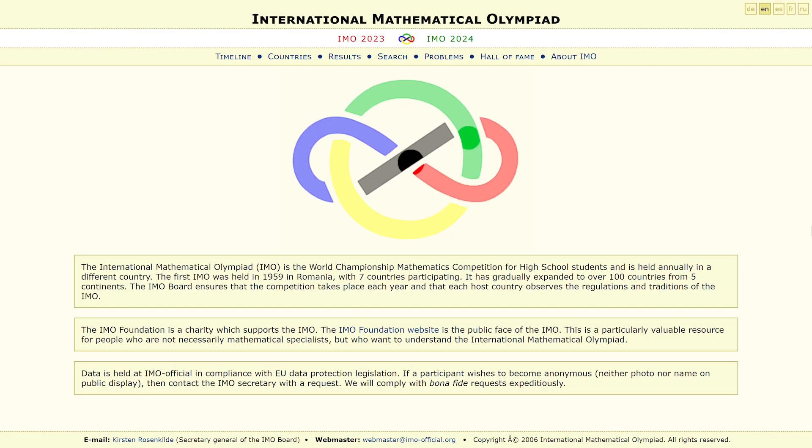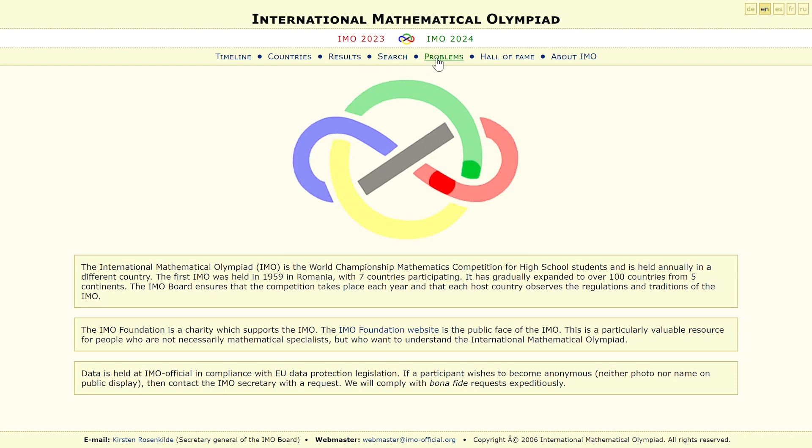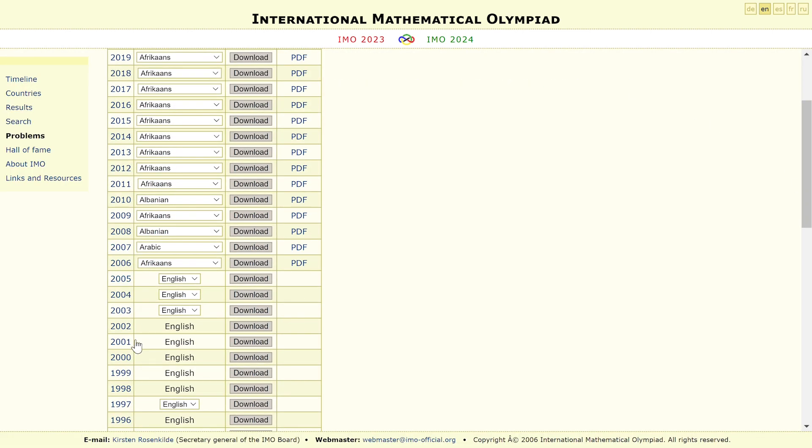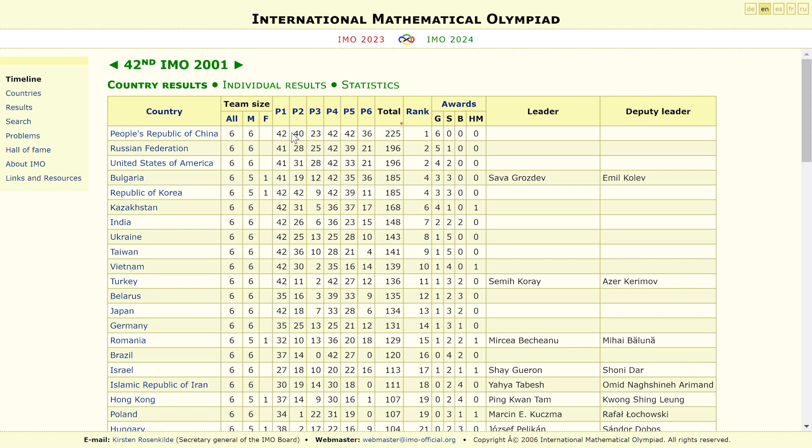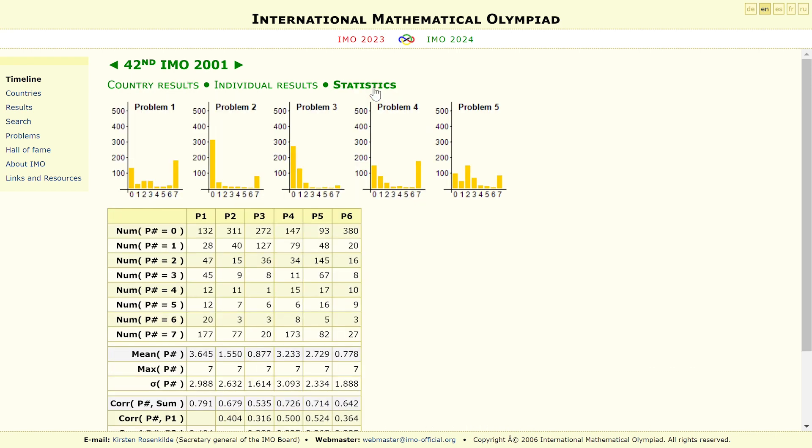The problem I want to share with you is from 2001 and was the last problem on the paper. Here's a distribution of scores for that problem. It had the lowest mean score that year and only 27 full solutions. The majority of students scored zero on this problem.